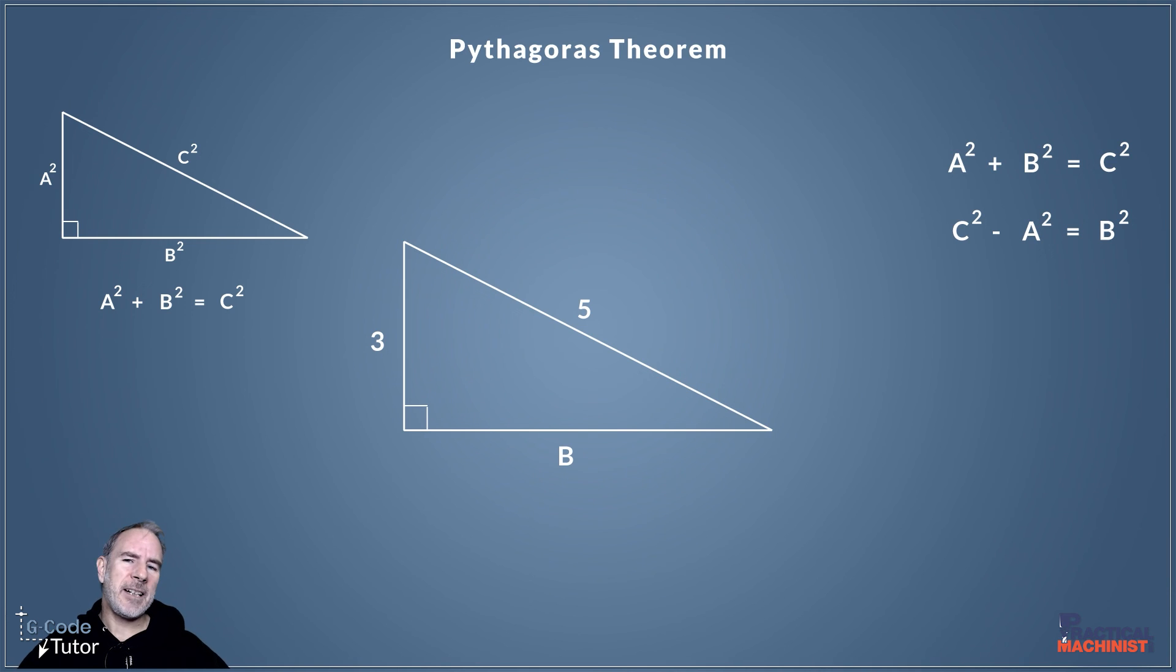So Pythagoras's theory is used in place of trigonometry when we know two lengths and we need to find the third length. For anything more complex than this, we would use trigonometry to work out angles, etc.